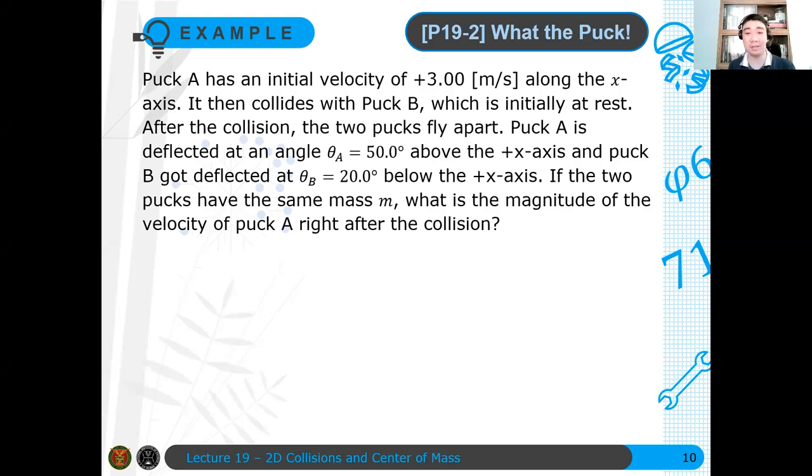This time the question is what the puck? Puck A has an initial velocity of positive 3 meters per second along the x-axis. It then collides with puck B, which is initially at rest. After the collision, the two pucks fly apart. Puck A is deflected at an angle θ_A equals 50 degrees above the positive x-axis and puck B got deflected at θ_B equals 20 degrees below the positive x-axis. If the two pucks have the same mass m, what is the magnitude of the velocity of puck A right after the collision?